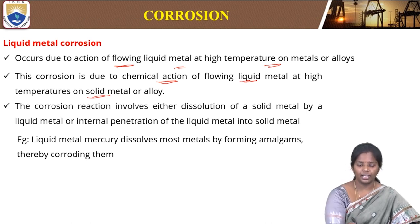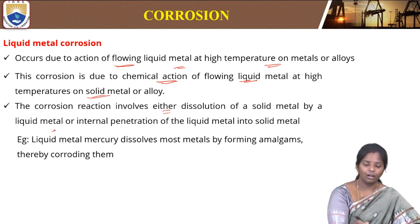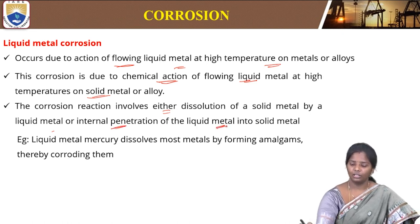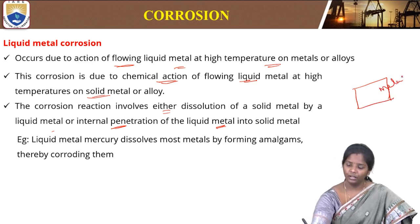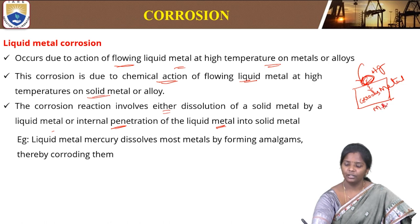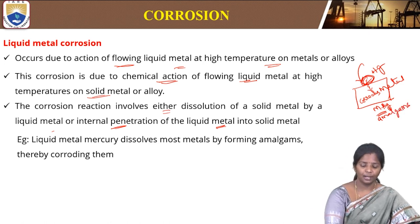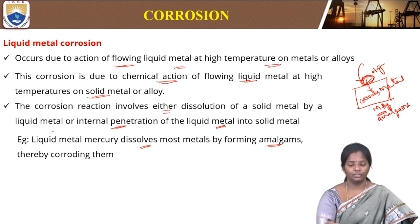For example, if we have a metal and there is a drop of mercury, it will slowly penetrate into the metal and corrode it, forming metal amalgam. Liquid metal mercury dissolves most metals by forming amalgams and thereby corrodes them.